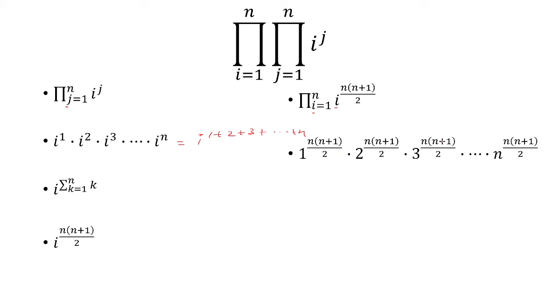So they all have the same exponent, and we can factor out that exponent. Inside the parentheses, we'll just have 1 times 2 all the way up to n, which is just n factorial. So the final answer is n factorial raised to the n times n plus 1 over 2 power.